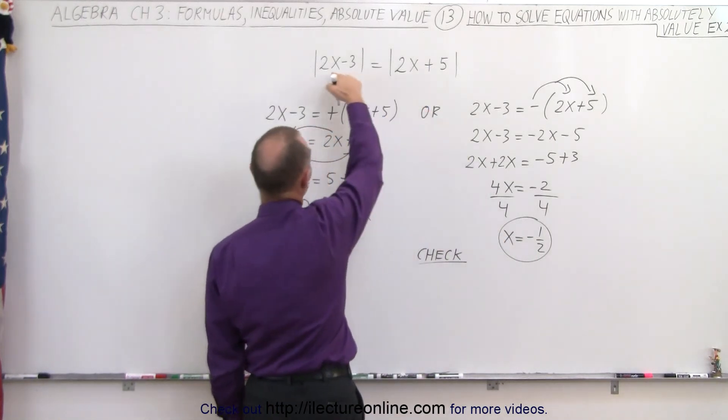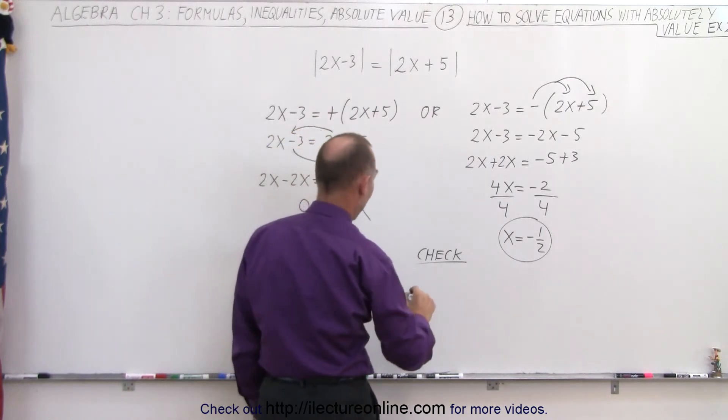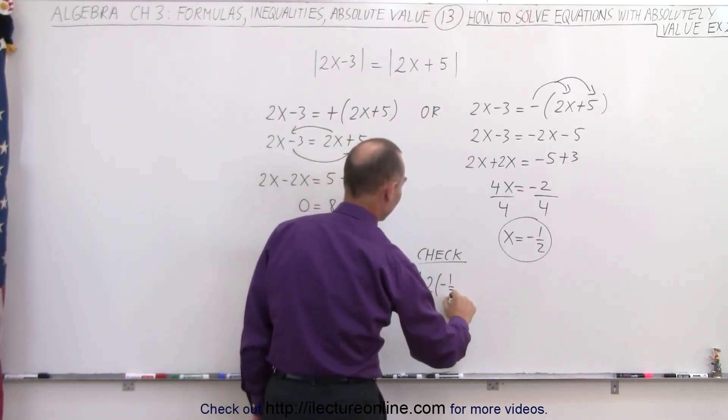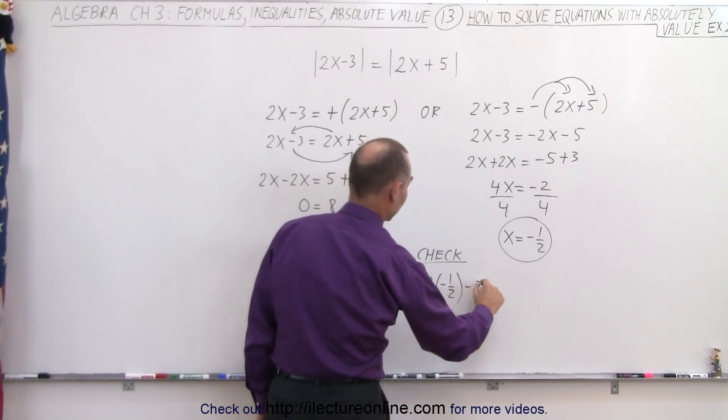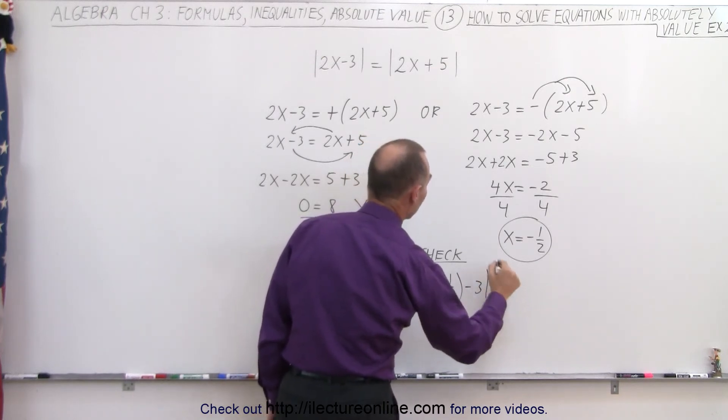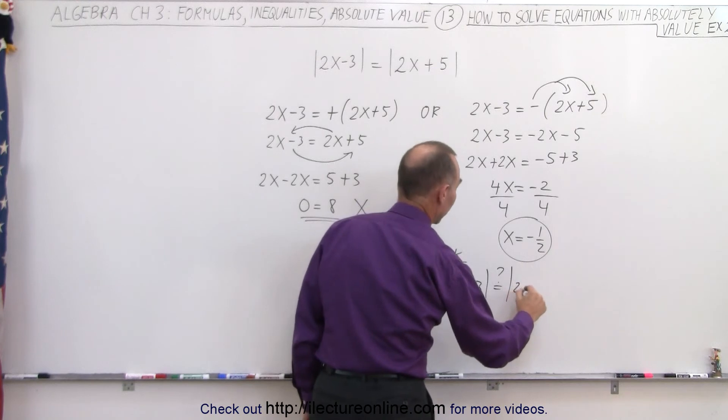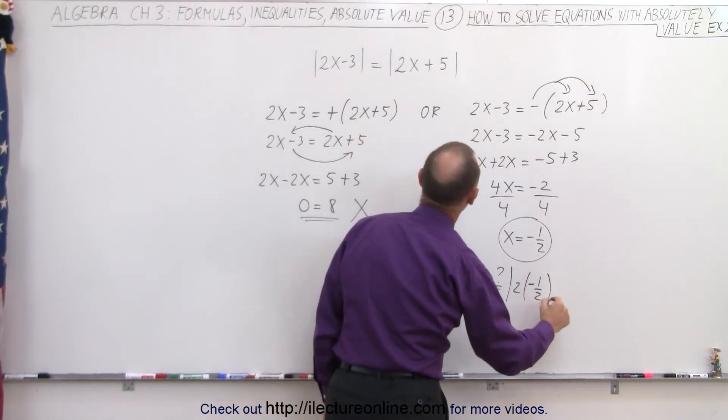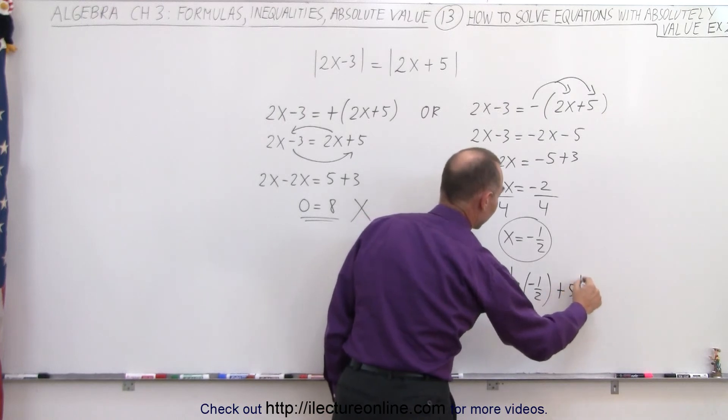So let's replace x by negative one-half, so we have the absolute value of 2 times negative one-half minus 3. And the question is, is that equal to 2 times negative one-half plus 5?